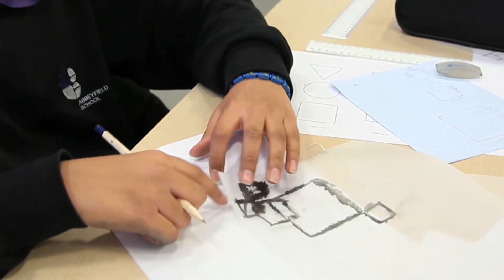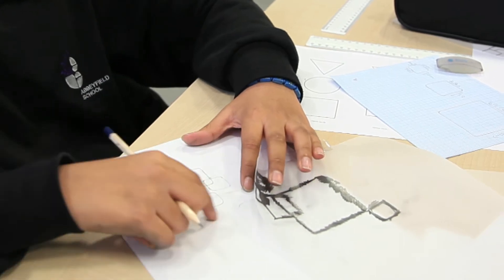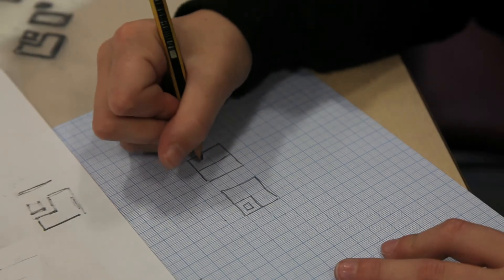I put it on tracing paper and I put it into the shape. I drew a square and made it into three quarters of a square.